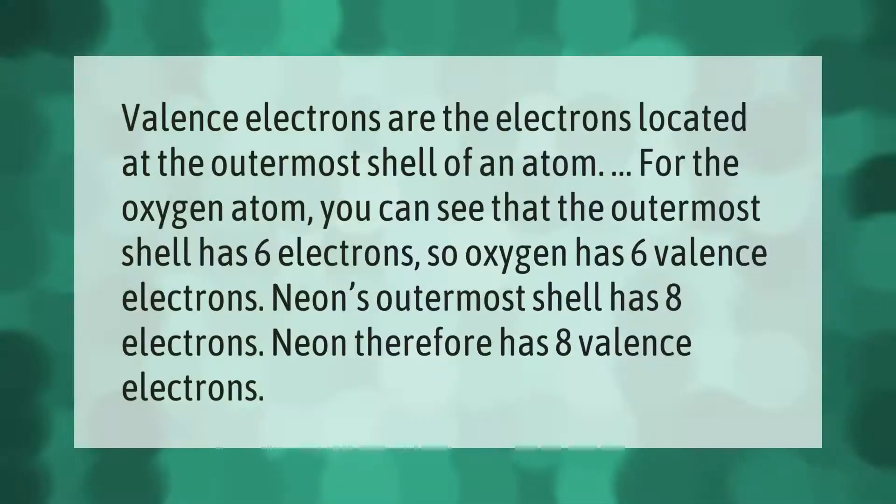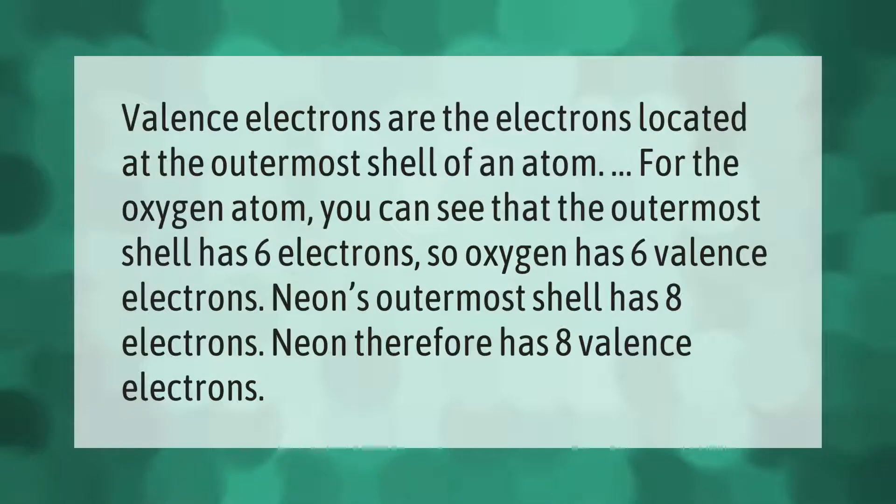Valence electrons are the electrons located at the outermost shell of an atom. For the oxygen atom, you can see that the outermost shell has six electrons, so oxygen has six valence electrons. Neon's outermost shell has eight electrons. Neon therefore has eight valence electrons.